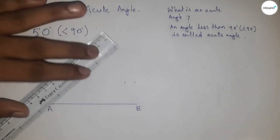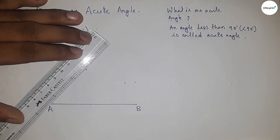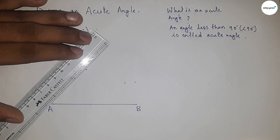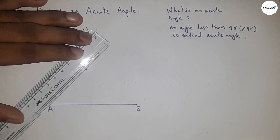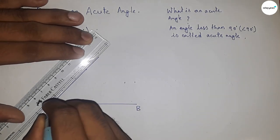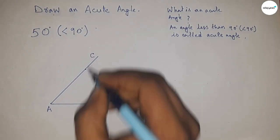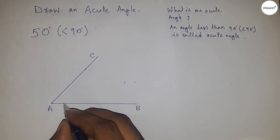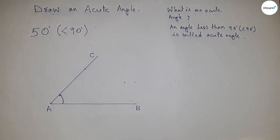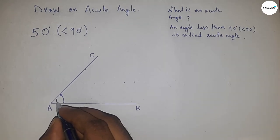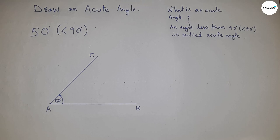Now joining this to get the acute angle of 50 degrees. Taking this as point C, so angle BAC or CAB equals 50 degrees.